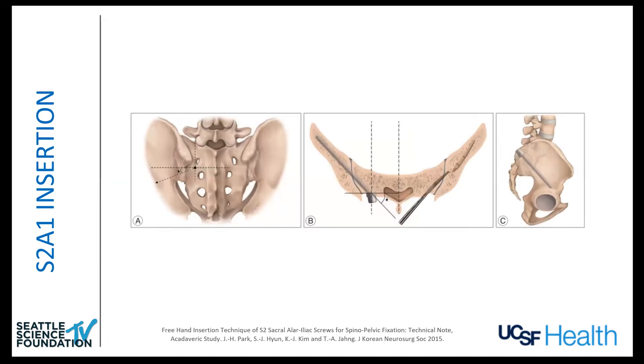The S2AI screws start just distal to the S1 foramen and slightly lateral. Your trajectory is down the column, but you have to cross the SI joint, shooting just above the sciatic notch. You get really dense bone both above the sciatic notch and as you cross the SI joint. It's somewhat challenging because that palpation you get with the awl — you have to cross multiple cortices — brings a level of uncertainty and requires a lot of imaging to do it safely.